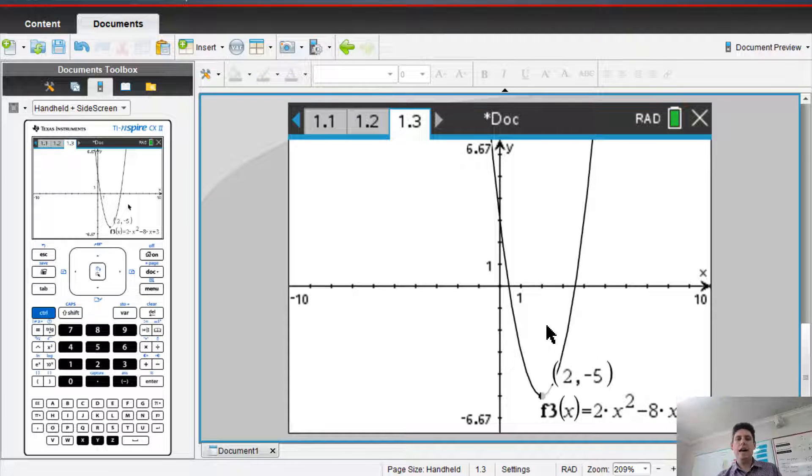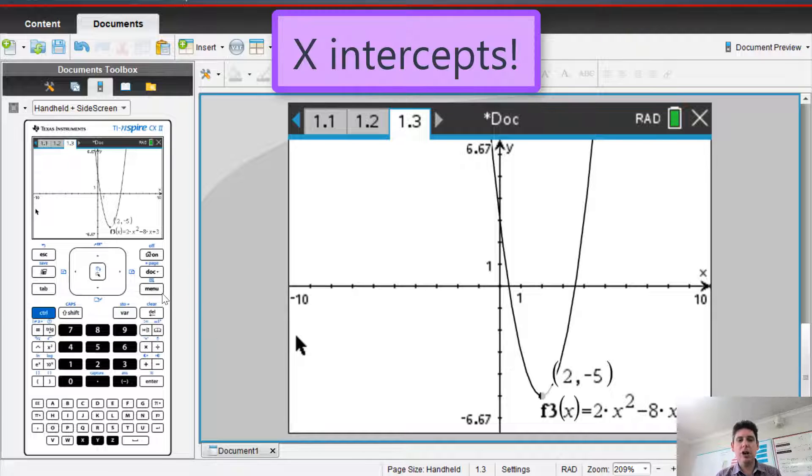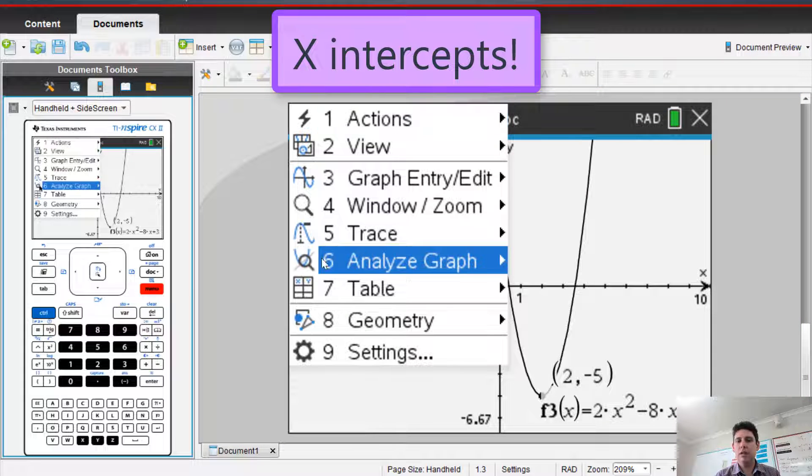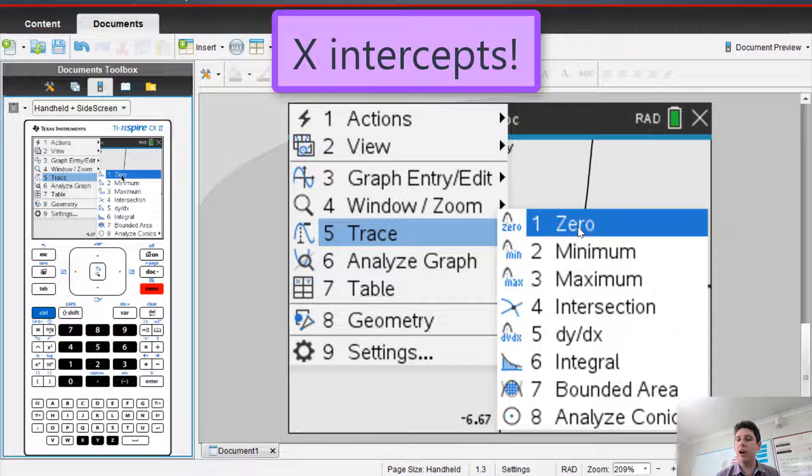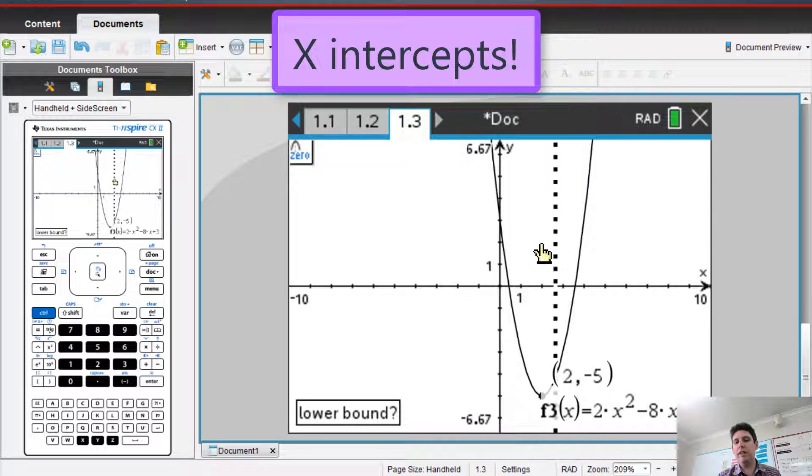What's another point we need? X intercepts. So you go menu. Analyze graph. Which one do you think it is? No, it's called zeros. So you click on the zero.